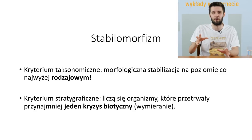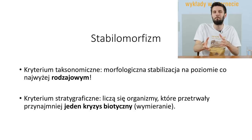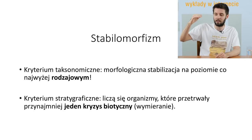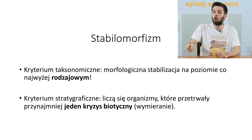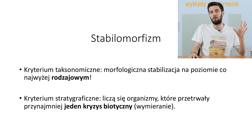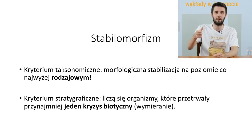Stabilomorfem, czyli tym organizmem, który rzeczywiście pasowałby do naukowej definicji żywej skamieniałości, są takie organizmy, które znajdują się w podziale taksonomicznym co najwyżej na poziomie rodzajowym - to jest tak zwane kryterium taksonomiczne - oraz takie, które przeżyły przynajmniej jedno wielkie wymieranie, czyli przynajmniej jeden wielki kryzys biotyczny. To jest kryterium stratyraficzne. Dwa kryteria: taksonomiczne i stratyraficzne.